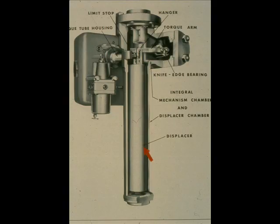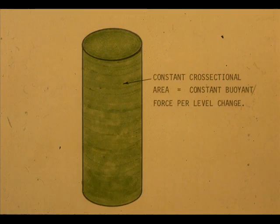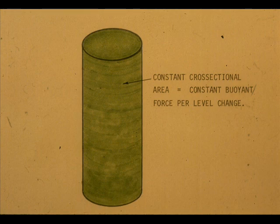Let's consider the hollow stainless steel cylinder again. It is precisely what is inside a displacer type level transmitter. Why is the displacer cylindrical? It is cylindrical so it will have a constant cross-sectional area. This means for each equal unit of submersion, there will be an equal increment of buoyant force. This yields a linear relationship between level and buoyancy.